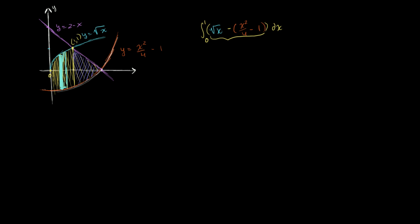And by the exact same logic, we can figure out the area of the right region. The right region, we're going from x equals 1 to x equals 2. The upper function is 2 minus x. And from that, we're going to subtract the lower function, which is x squared over 4 minus 1.